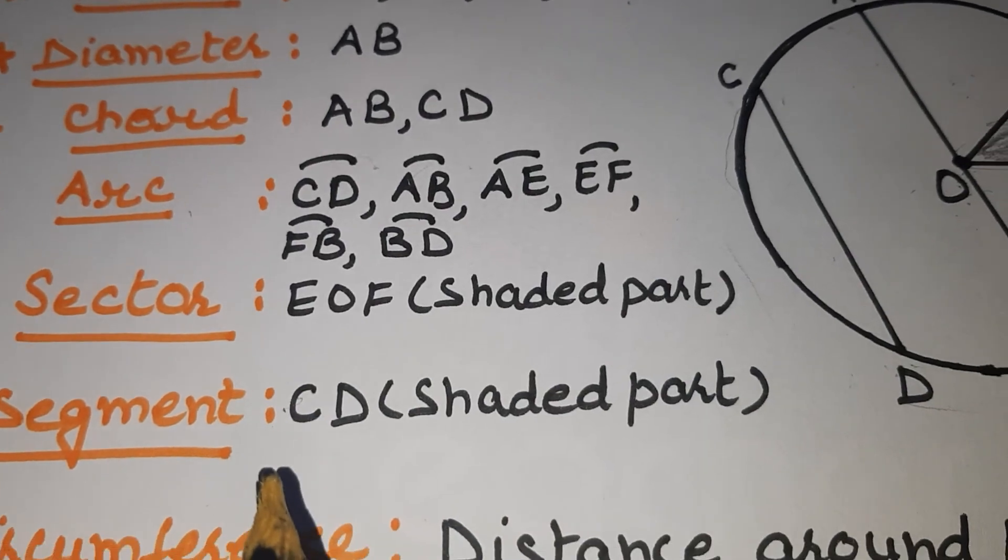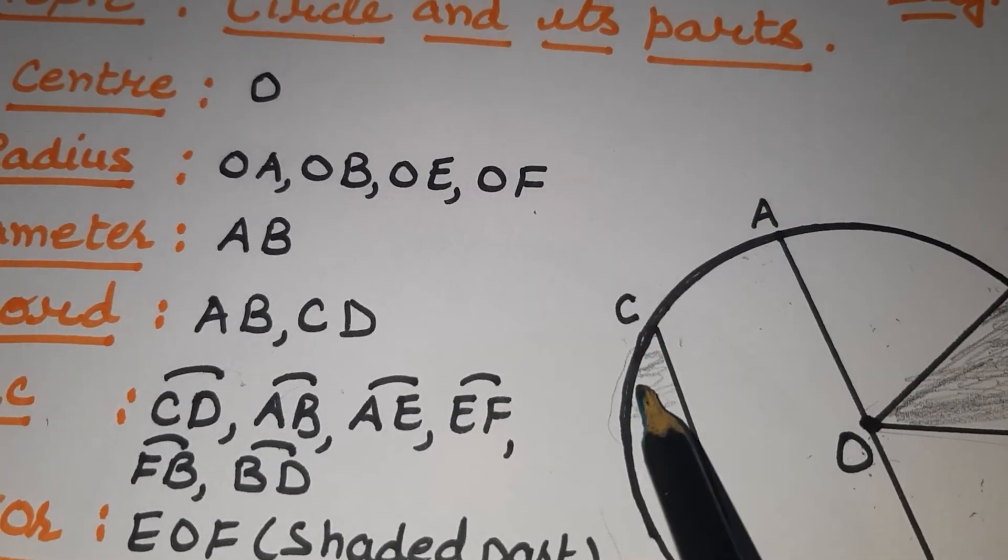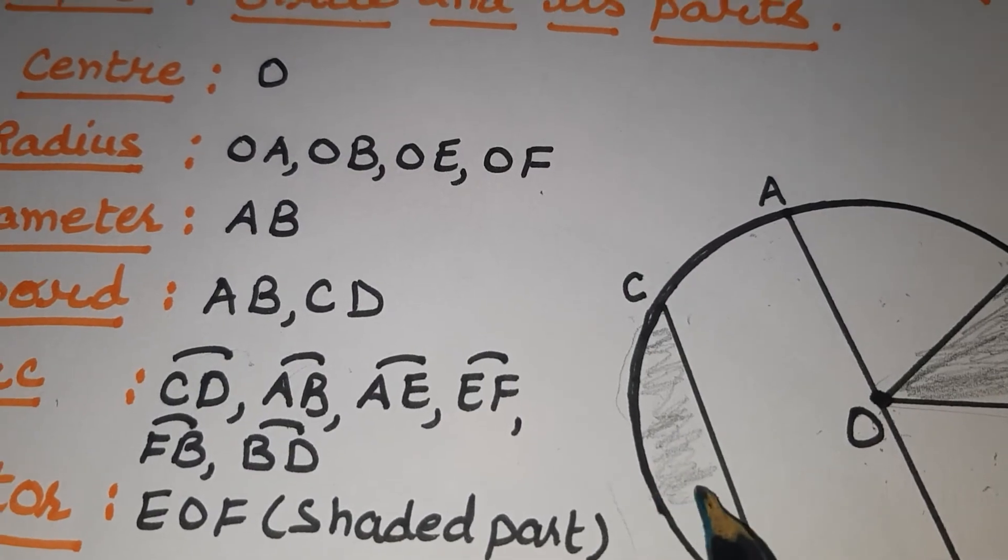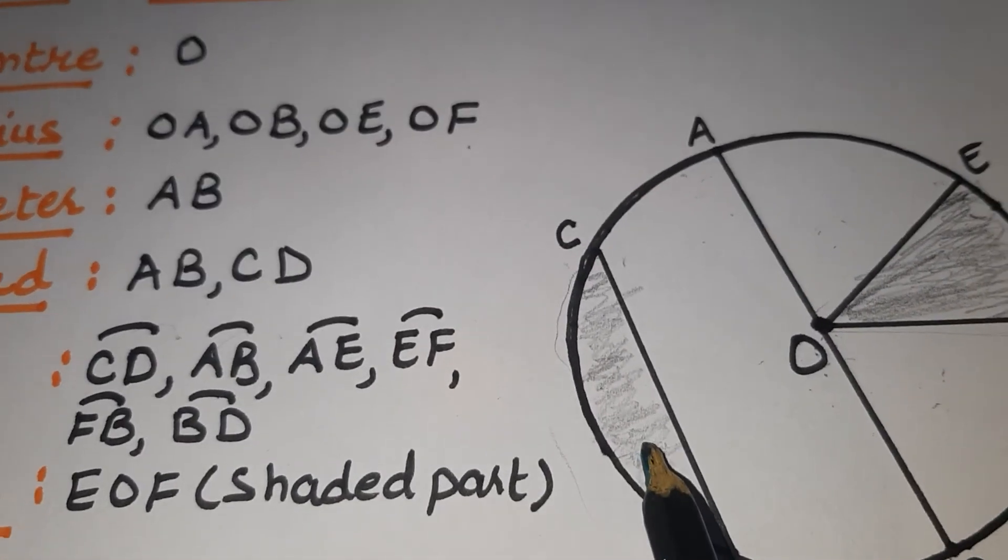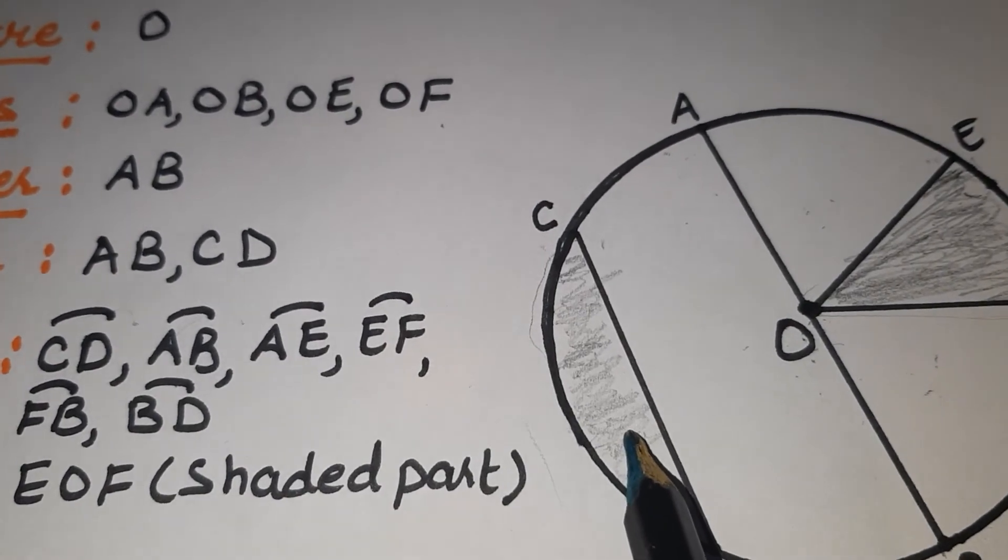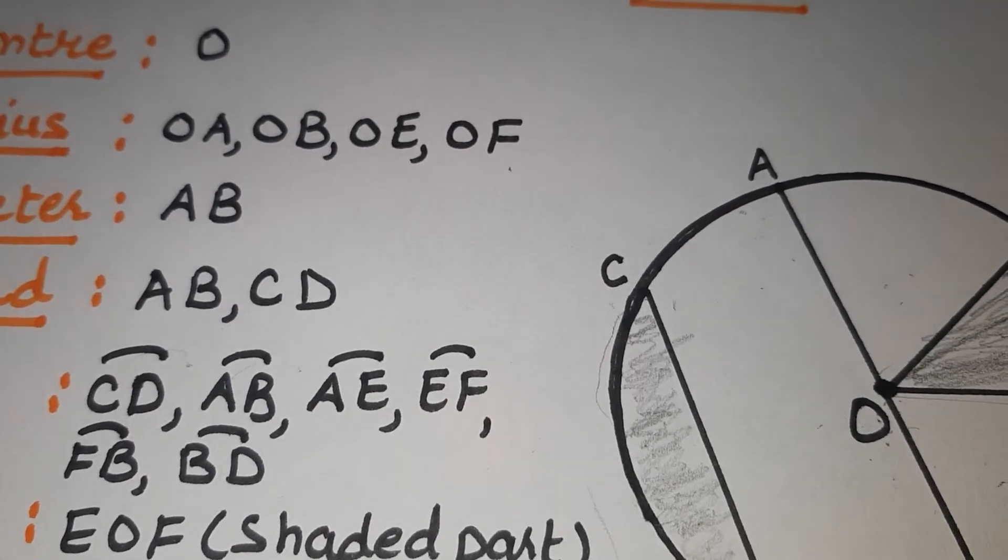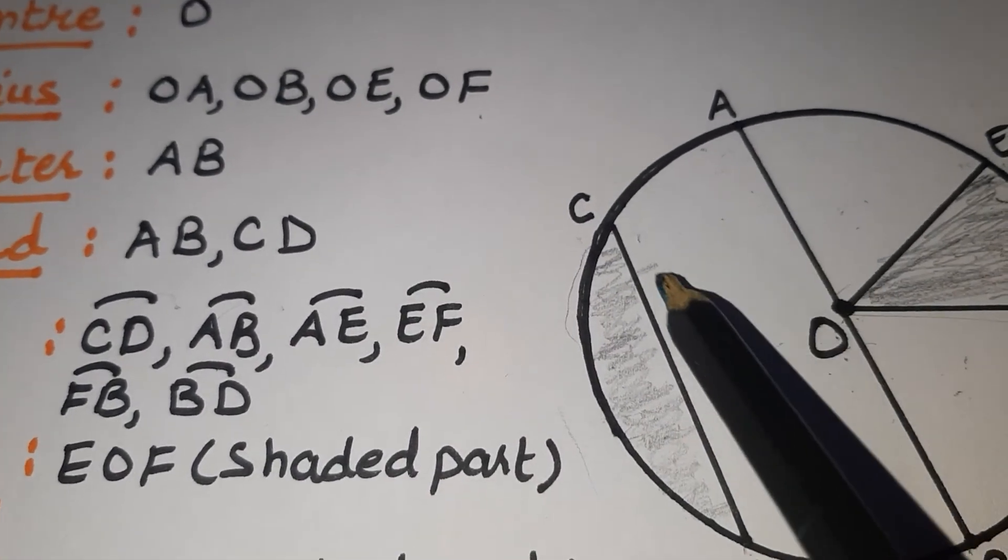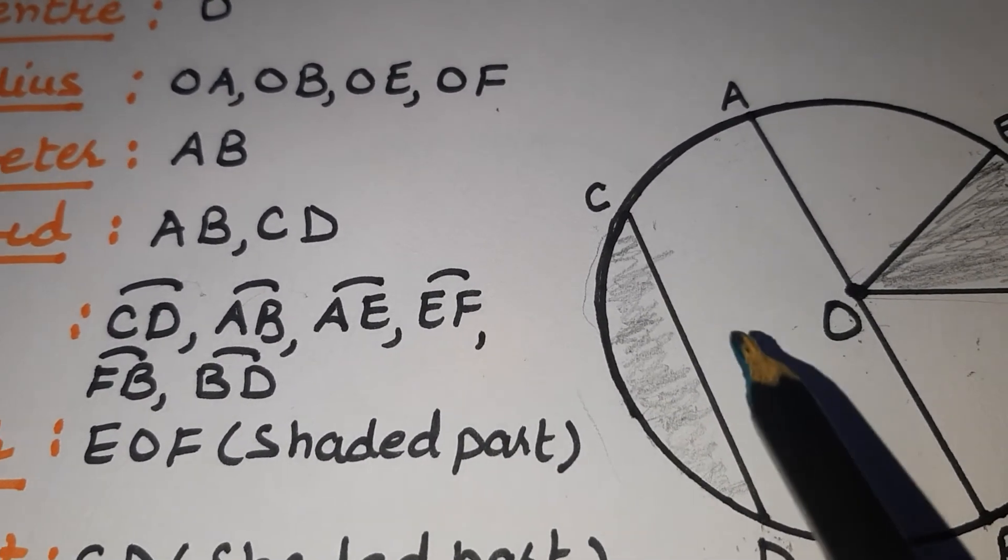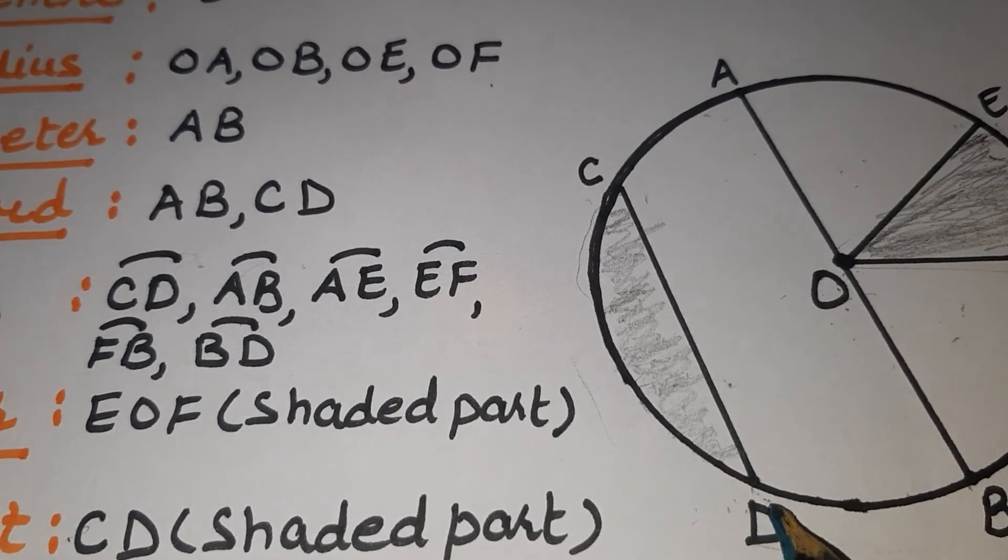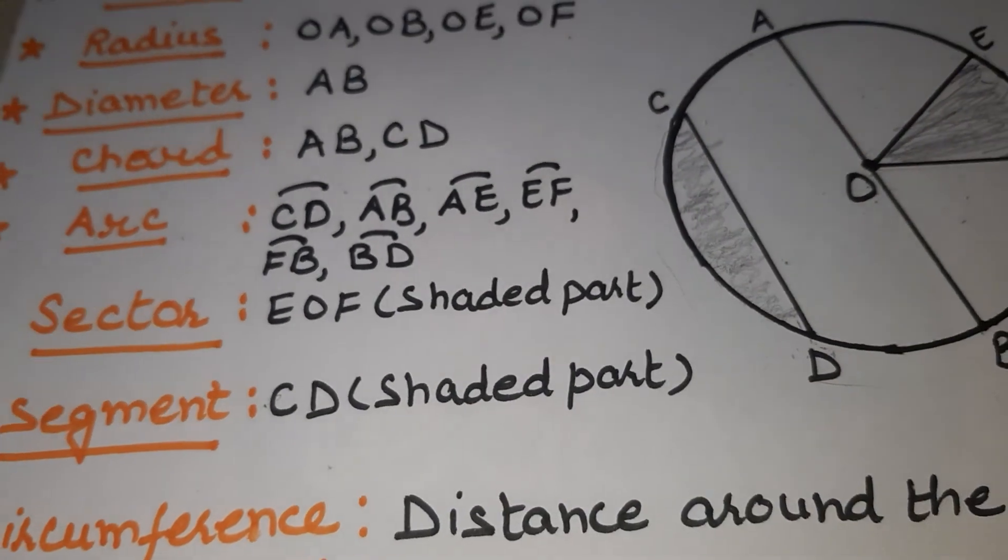Next is segment. Segment is this CD part, shaded part. This part which I am shading, this part is called segment. Segment is also a region. It is not any point, it is not any line segment. So it is a region enclosed from one side by the arc of the circle CD and second side by the chord of the circle. From one side it is enclosed by the arc and from the second side it is enclosed by the chord. So this CD portion is called segment.